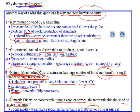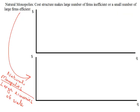A natural monopoly is when the cost structure makes a large number of firms inefficient — or said another way, it makes a small number of very large firms efficient, so there are only so many firms that are going to survive in this market. I want to draw what this would look like on a graph. The cost structure makes a large number of firms inefficient because if there's a large number of firms, each individual firm is going to tend to be smaller.